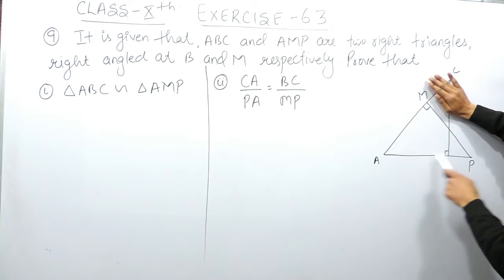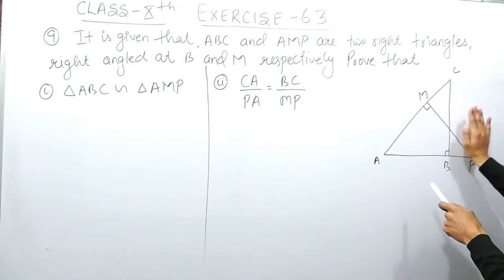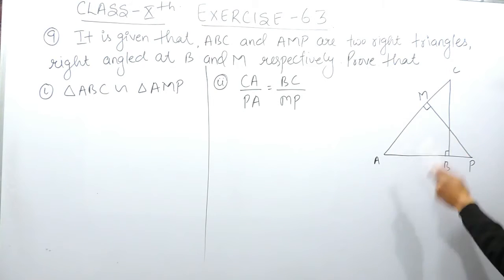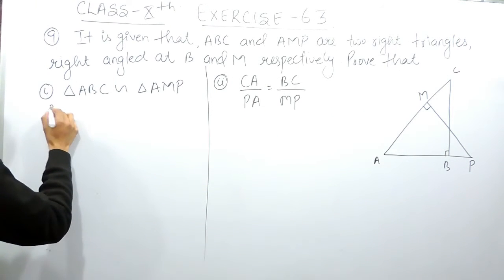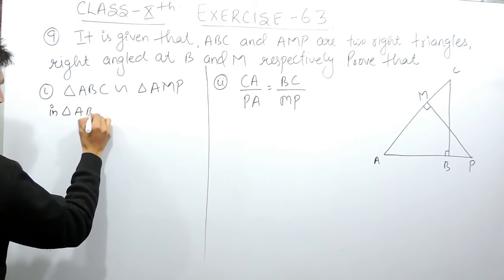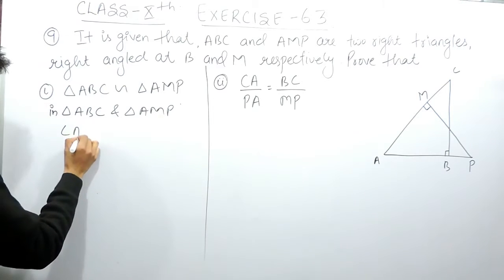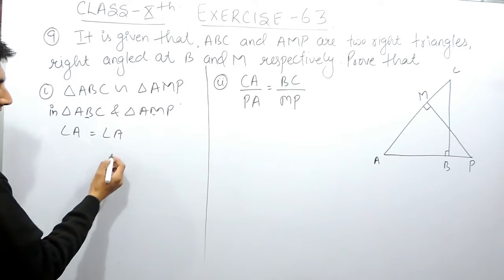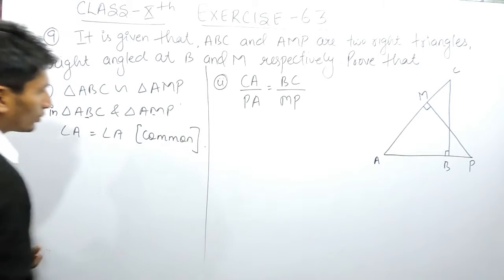In triangle AMP, angle A is the same as in triangle ABC — angle A is common to both triangles. So we can say that in triangle ABC and triangle AMP, angle A is equal to angle A. This is the common angle, so one angle is equal in both the triangles.